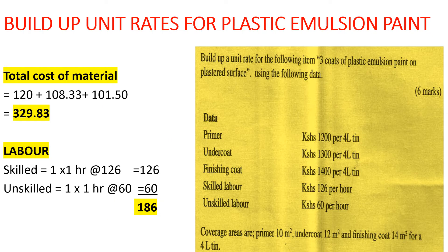Now that we have the cost of all three coats, we find the total cost of materials: the cost of the first coat plus the second coat plus the third coat gives us a total material cost of 329.83 shillings.